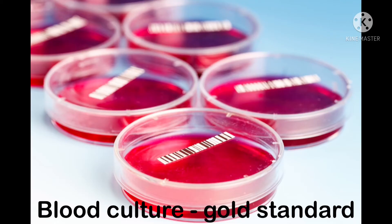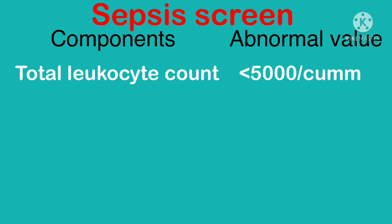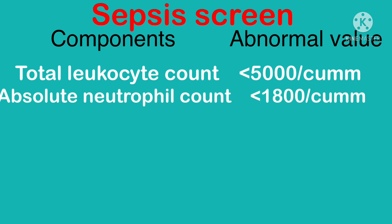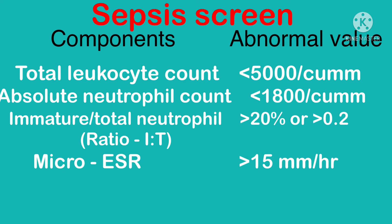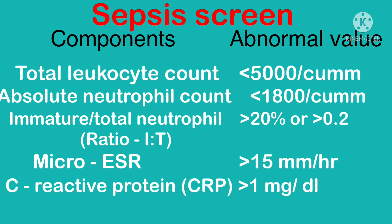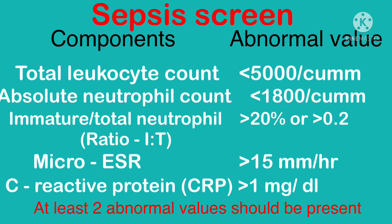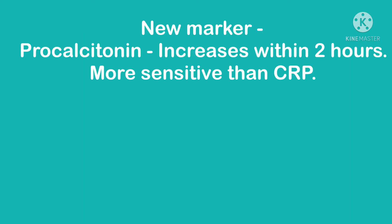For investigations, blood culture is the gold standard. We also perform sepsis screening, looking at total leukocyte count, absolute neutrophil count, immature-to-total neutrophil (I:T) ratio, micro-ESR, and C-reactive protein (CRP). At least two abnormal values should be present to suspect sepsis.